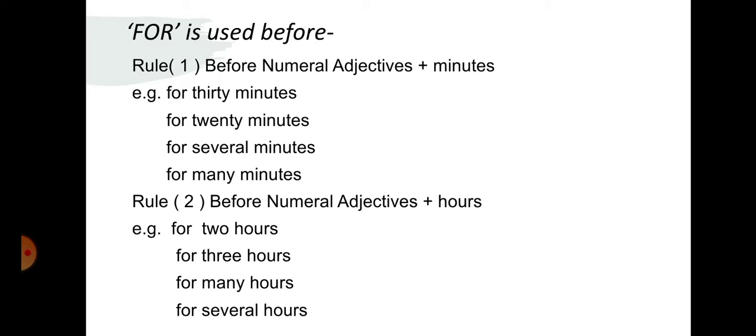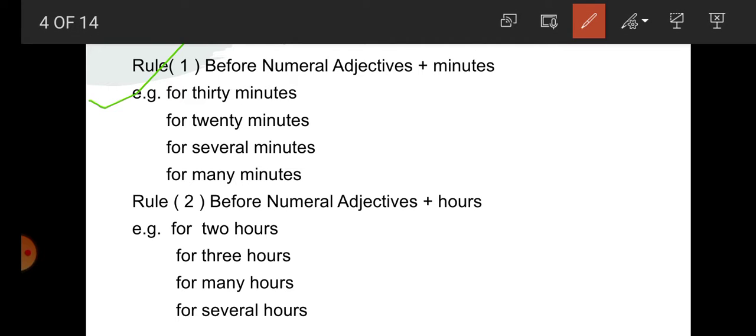Students, rule number 1: for is used before a numerical adjective plus minutes. For example: for 30 minutes, for 20 minutes, for several minutes, for many minutes. Here 30, 20, several and many are numeral adjectives. For is used before indefinite time — for 30 minutes, it is not definite which 30 minutes; for 20 minutes, indefinite time; for several minutes, indefinite; for many minutes, indefinite. So for is used with indefinite time.